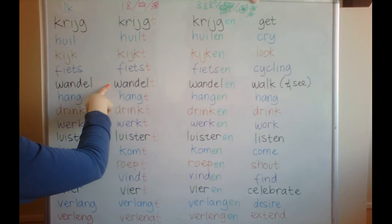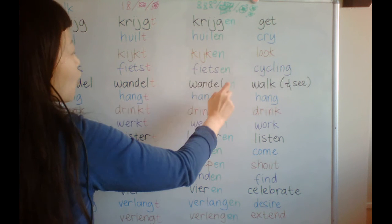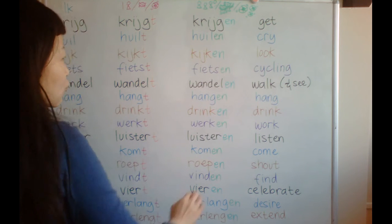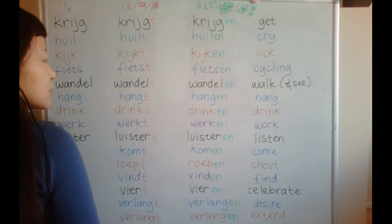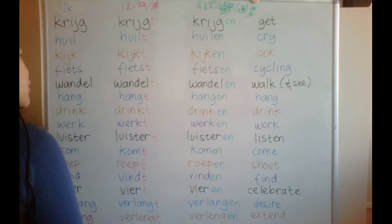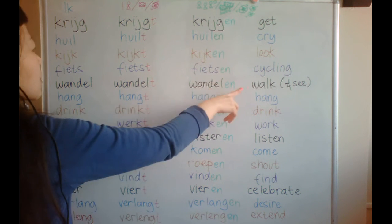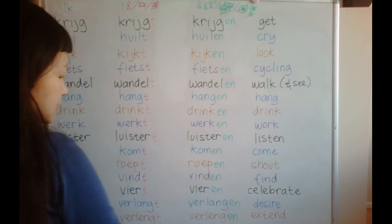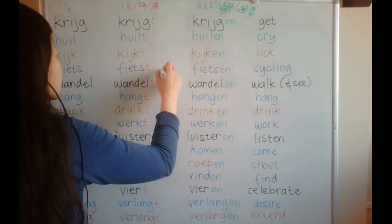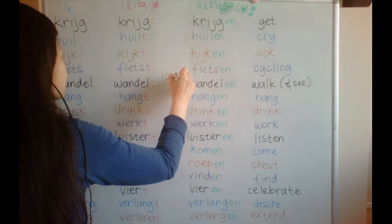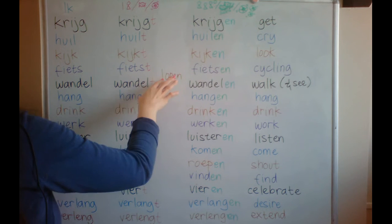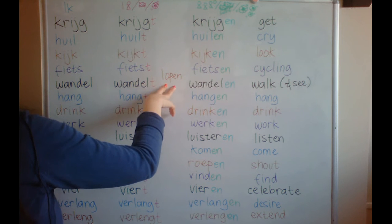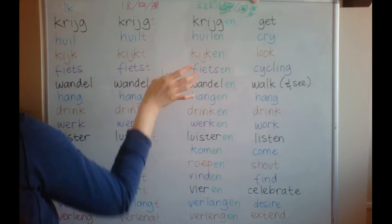'Wandel / wandelt / wandelen' — walk. This word means you are enjoying the walk — you don't just walk, but you see the surroundings and enjoy the environment. If you only do walking without enjoying the surroundings, that is 'lopen'. I don't put 'lopen' here because it has different formations and doesn't fit this conjugation pattern.